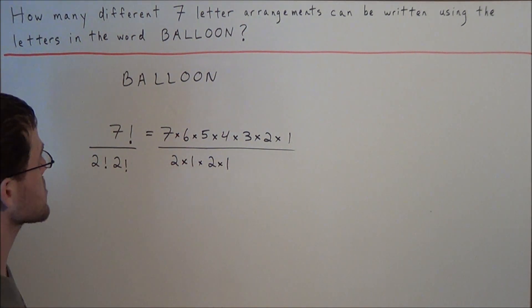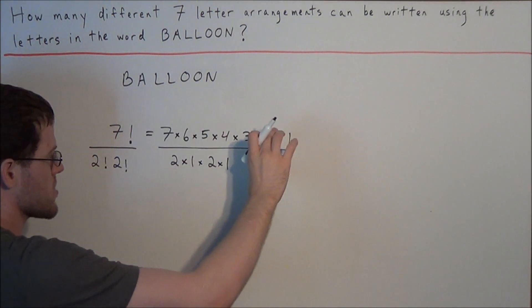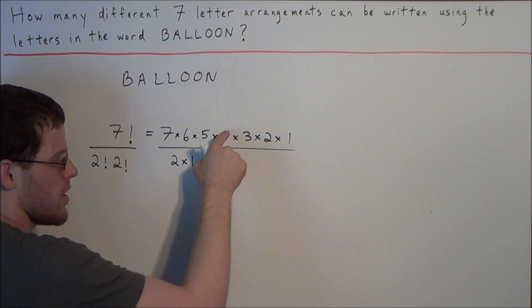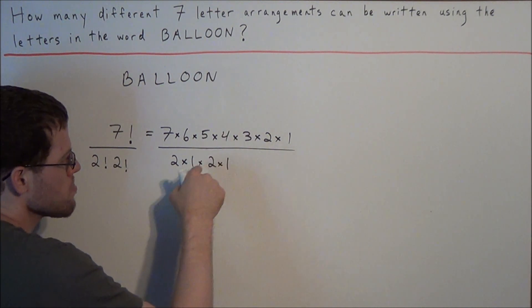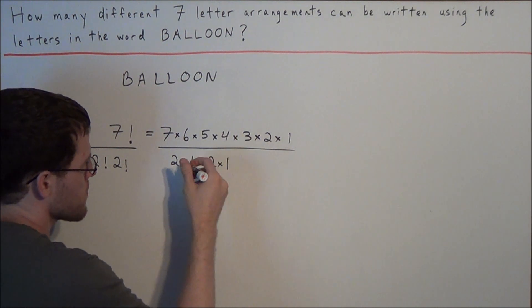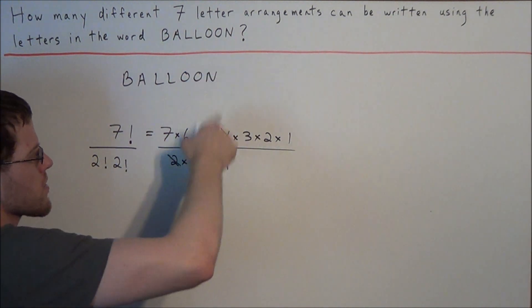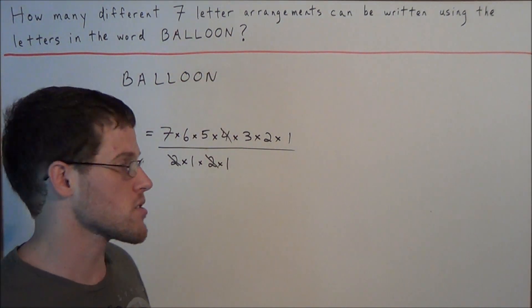So now if we're simplifying this expression, or this equation I should say, we need to look at 2 × 2 and this 4 up here. Well we could simplify this because 2 × 2 equals 4. So we could cross off 2, 2, and 4 because 2 × 2 equals 4 and then the common factors will just simply cancel out.